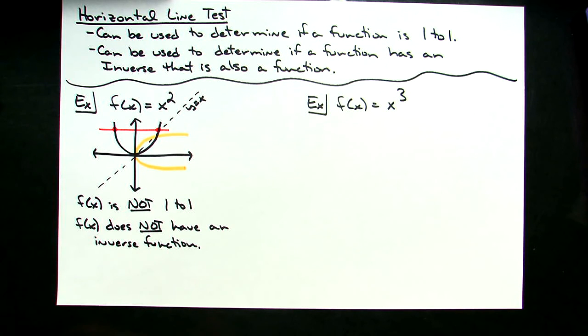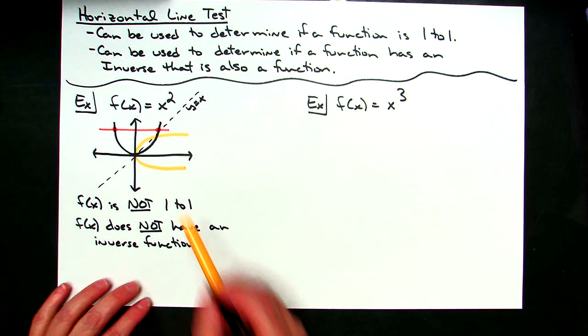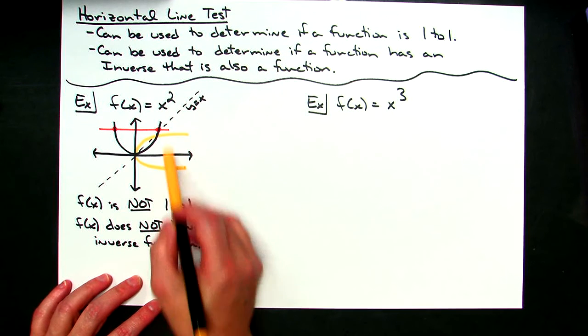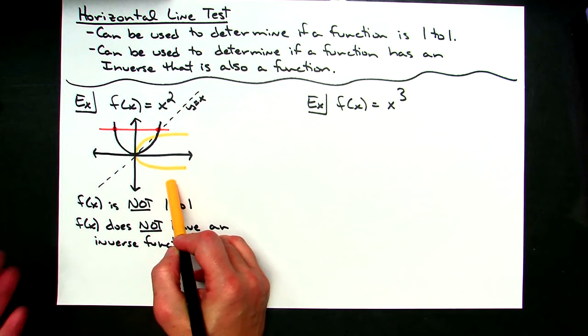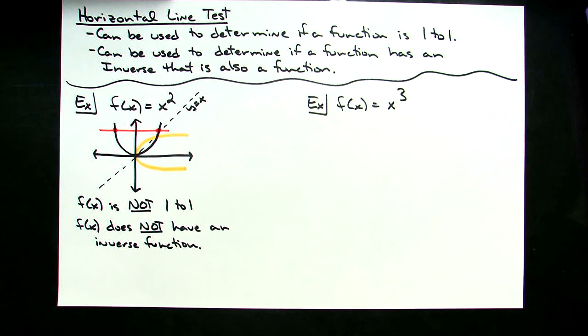Now, it clearly has an inverse. That inverse is just not a function because it would fail the vertical line test, which determines whether or not a relation is a function. So then let's make a special little note down here on this example.